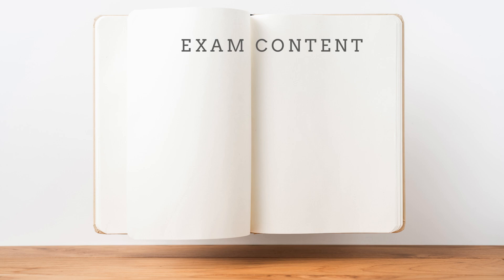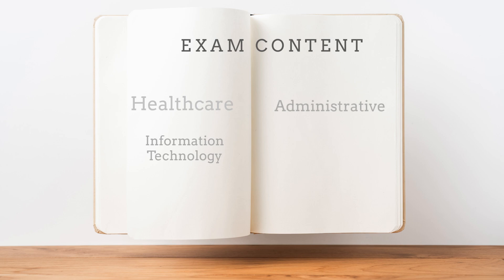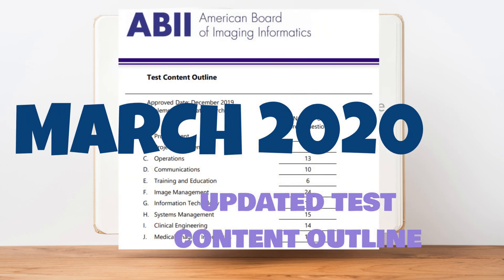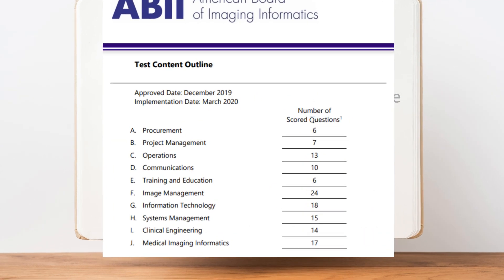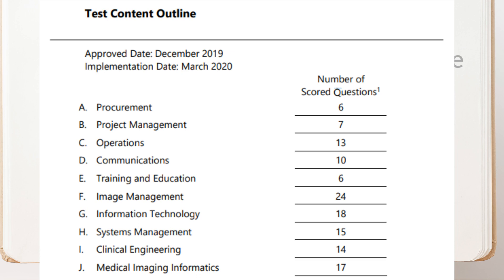The exam content — generally speaking, the content of the exam is comprised of healthcare, IT, and administrative questions. In March of 2020, the ABII updated their specific topics covered on the exam. There will be 6 questions on procurement, 7 on project management, 13 on operations, 10 on communications, 6 on training and education, 24 on image management, 18 on information technology, 15 on systems management, 14 on clinical engineering, and 17 on medical imaging informatics.